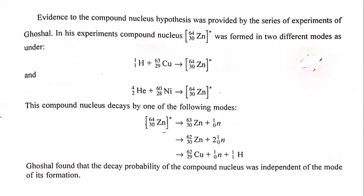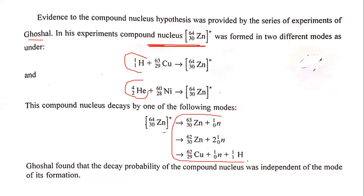Because of Ghoshal's experiment, Zinc is used as a Zinc compound nucleus. Ghoshal is a scientist. There is a proton and alpha particle as inputs, giving a third product. In one case it gives copper, which is a different element or a different isotope form. So, multiple reactions are possible in Ghoshal's experiment to verify the concept of the Compound Nucleus and explain nuclear reactions properly.